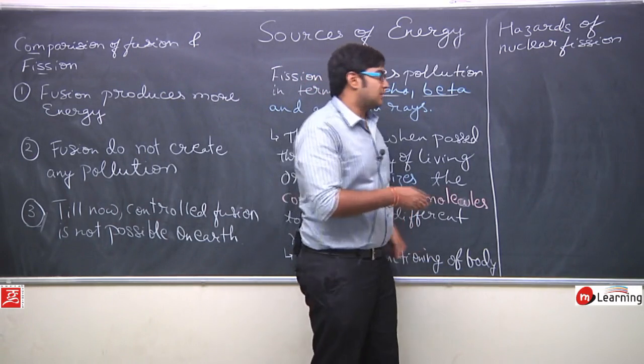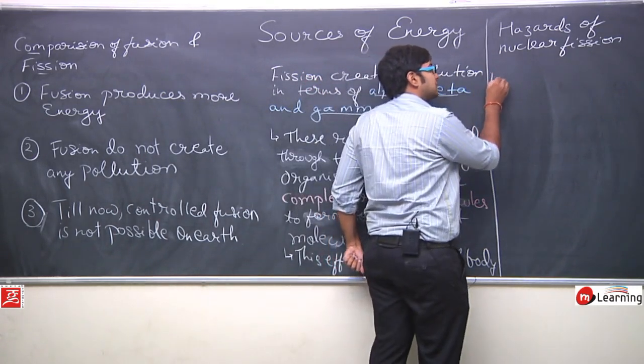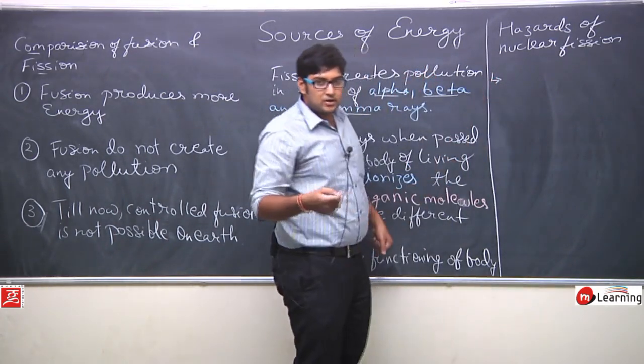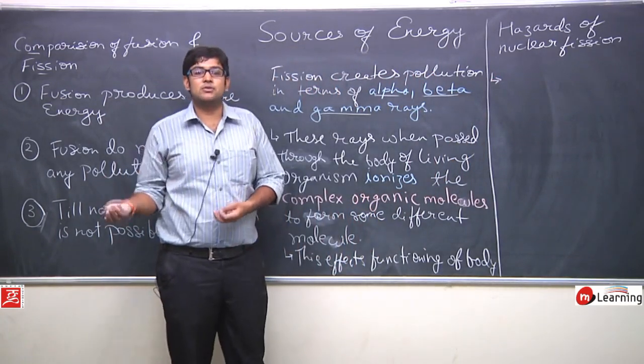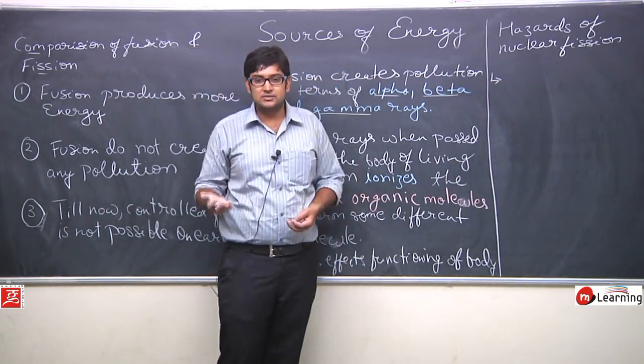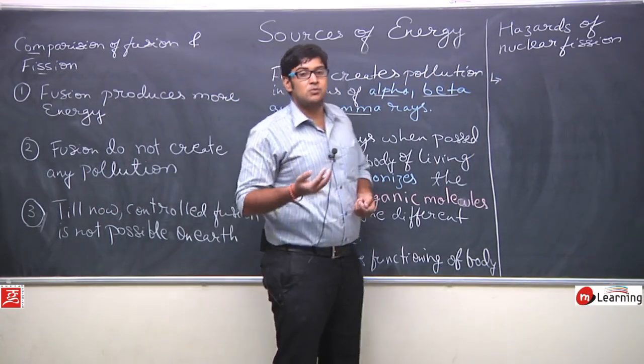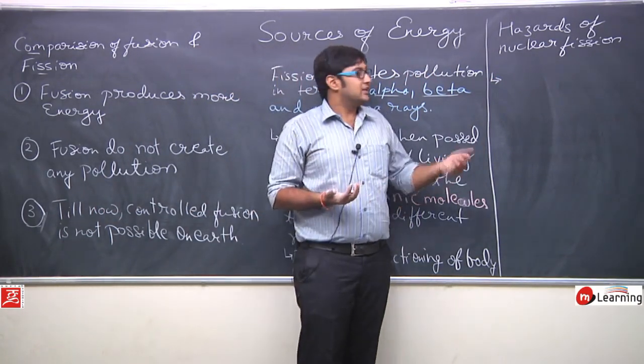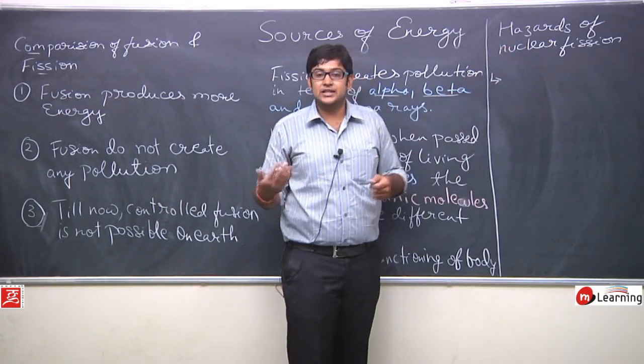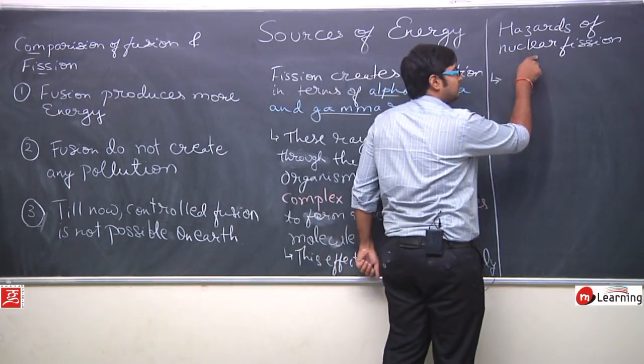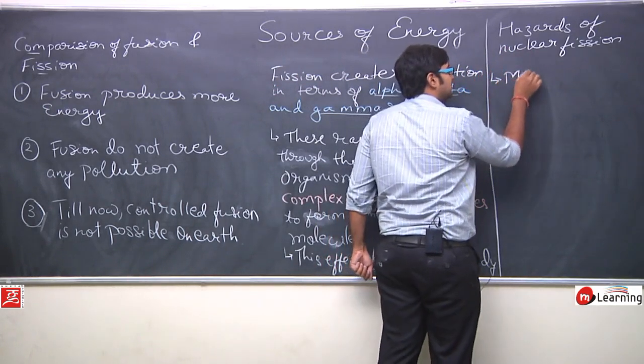Dekhi, nuclear fission mein kya hai? Sabse pehle aapko uranium ki awashyakta lagti hai. You need uranium for the nuclear fission. Toh aap kya karenge? Either plutonium aur thorium aur uranium, teeno mein se kisi bhi cheez ko. So aapko isko kaha se nikalna hoga? Ya aapko kaha pe milega? We will say it is inside the mine. Mine ke andar hota hai.